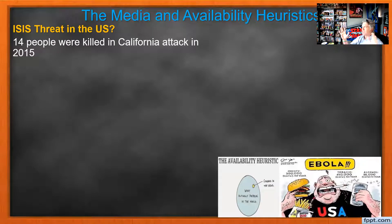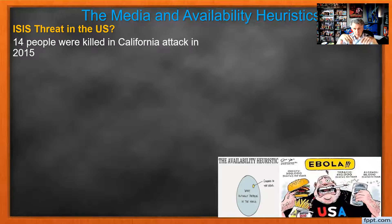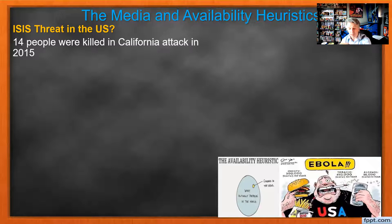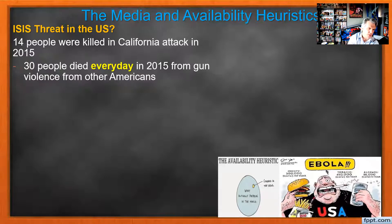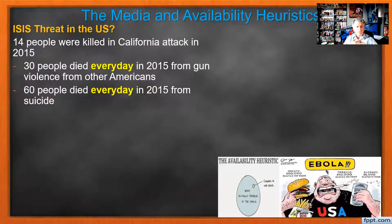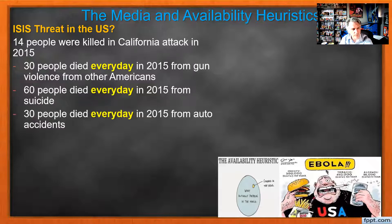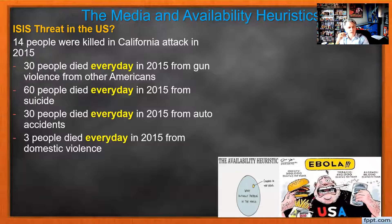Just a few years ago, like in 2015, ISIS was considered the biggest threat. There was a Christmas party in December of 2015 where 14 people were killed in a California terrorist attack — probably the last real terrorist attack from an outside group. 14 people were killed and suddenly ISIS becomes one of the big stories of the 2016 election. But 30 people died every day in 2015 from gun violence from other Americans. 60 people died every day from suicide, 30 from auto accidents, 30 from domestic violence — but we don't ban guns, don't make cars illegal, and marriage is still legal.